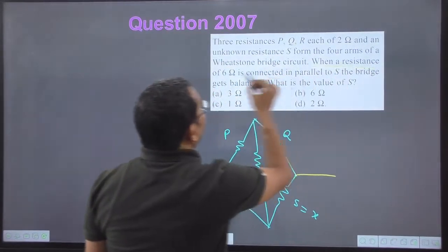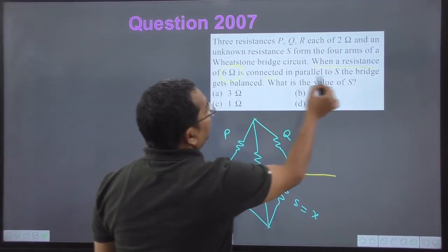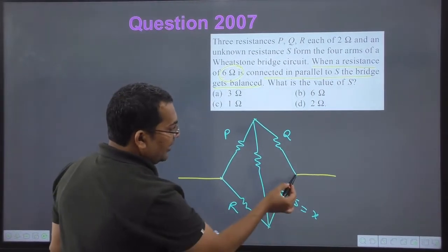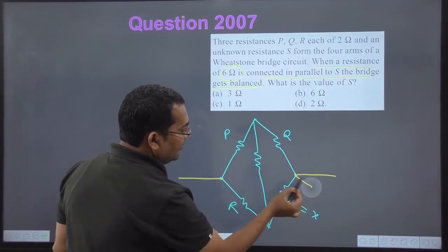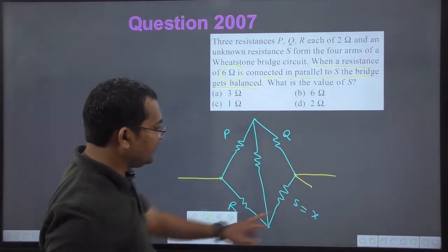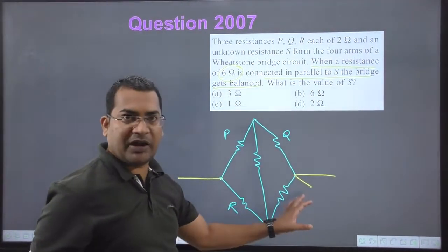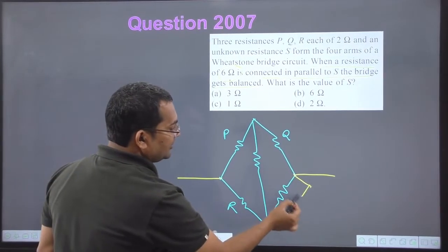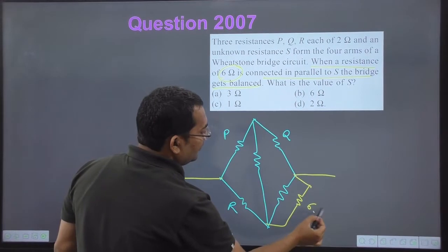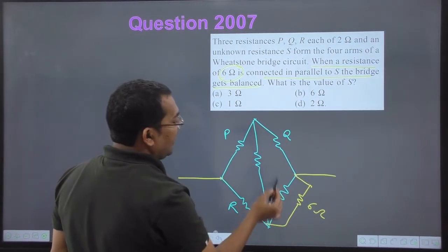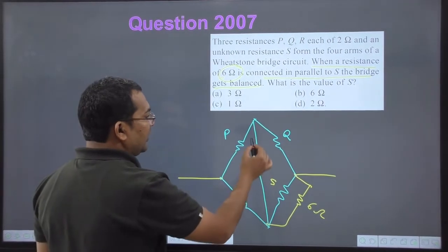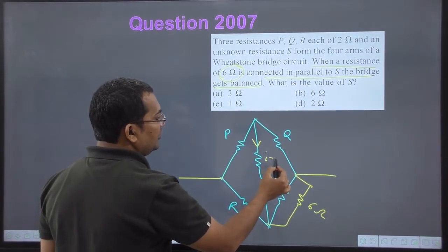When a 6 ohm resistance is connected in parallel to the S arm, the bridge balances. This is S, and if I connect a new resistance in parallel to S — a 6 ohm resistance parallel to S — the bridge becomes balanced, meaning the current through the galvanometer becomes 0.